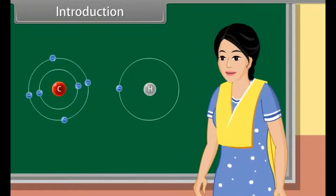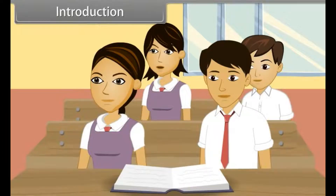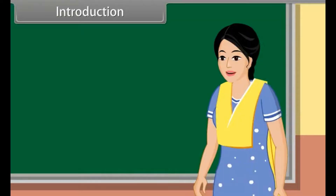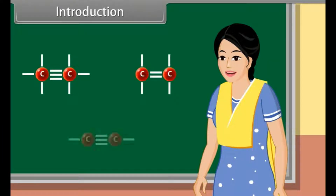Organic chemistry is the branch of chemistry that involves the study of carbon and hydrogen-containing compounds. The carbon-carbon atoms are attached by single bond, double bond or triple bond, and the functional group present on the organic compound decides its chemical nature.